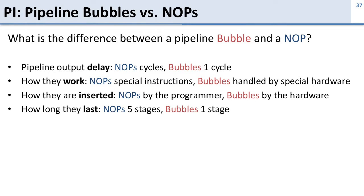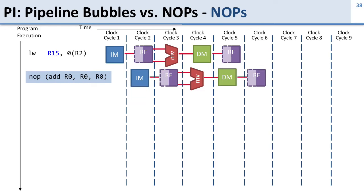So let's look at the difference between bubbles and NOPs. What is the difference between a pipeline bubble and a NOP? All right, so let's take a look at some examples here. Here we've got some code we're going to...